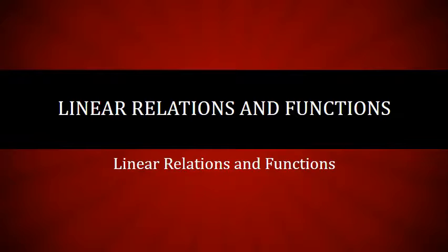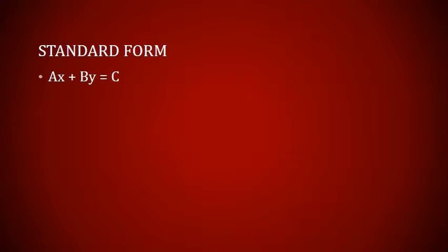When we get into finding X and Y intercepts, it might be a little bit useful there in standard form. So let's take a look at what standard form is, and then we'll have a couple of examples. We're going to go over some rules that we have to go by in order to write something in standard form. Again, as a reminder, standard form is AX plus BY equals C.